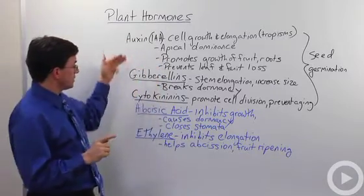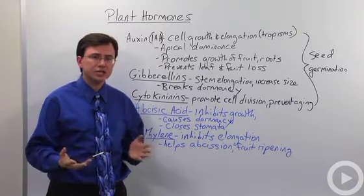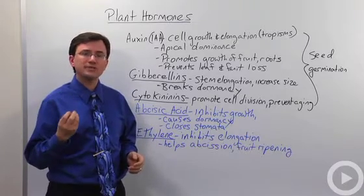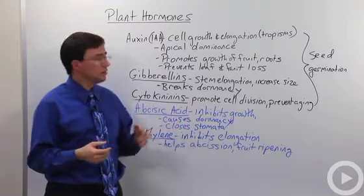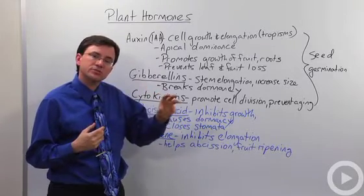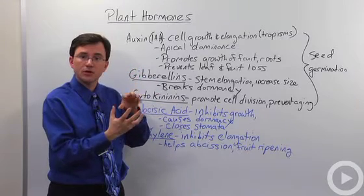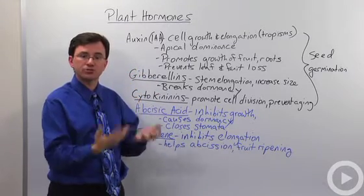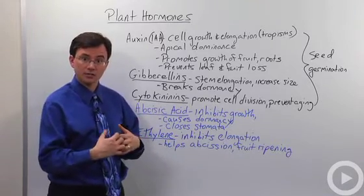Before I get into what the different classes of plant hormones do, I want to make sure you understand, in general, what a hormone is. A hormone is a chemical that's released by one cell or part of a body, and it travels to some target cell where a receptor protein will bind to that hormone and trigger off some change within the cell of the receiving cell.